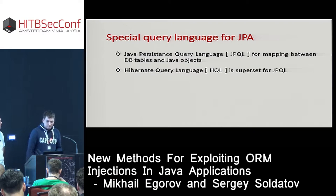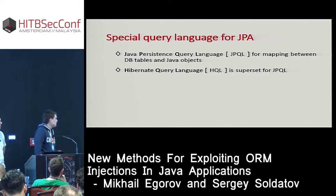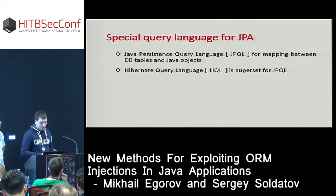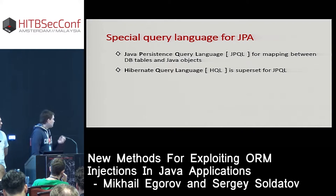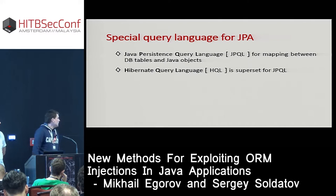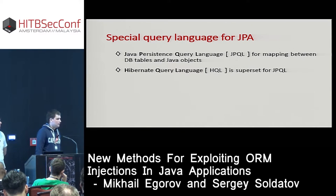ORM libraries utilize a special query language called Java Persistence Query Language (JPQL). It is used for mapping data between database tables and Java objects. For historical reasons, Hibernate ORM uses a different language called Hibernate Query Language (HQL), and HQL is a superset of JPQL.